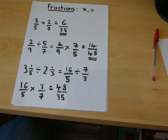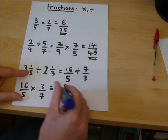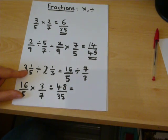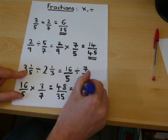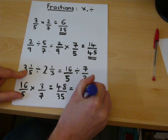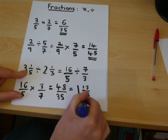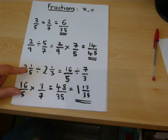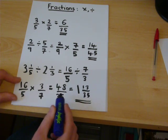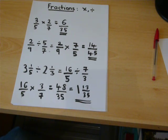To finish off, what you may do is you may say, how many 35s are there in 48? 1. Remainder 13 over 35. That is the answer as a mixed fraction rather than a top-heavy fraction.